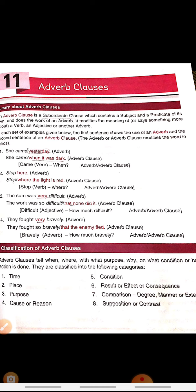Adverb clause of time answers when the action has been done. Adverb clause of place answers where. Adverb clause of purpose tells you the purpose behind the action. Adverb clause of reason tells you why. Adverb clause of condition states the condition for the action. Adverb clause of result tells you the effect or consequence. Adverb clause of comparison of degree differentiates between two subjects. Adverb clause of comparison of manner tells you how something happens. Adverb clause of contrast states two statements which are completely different from each other.